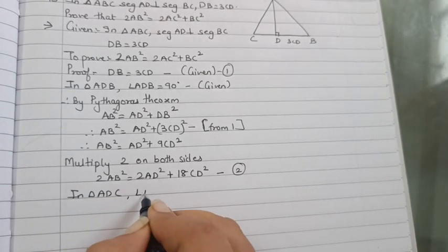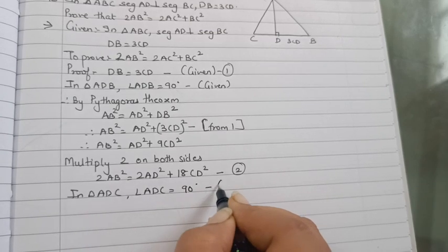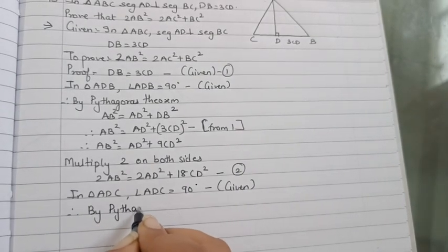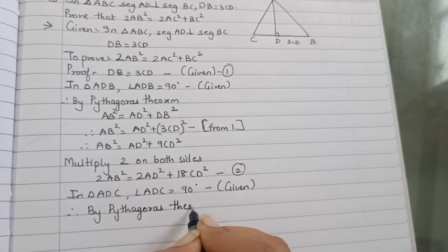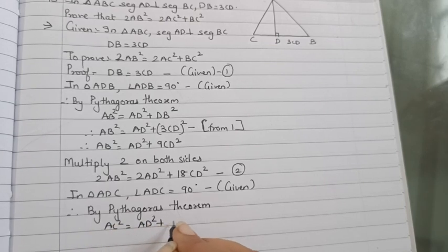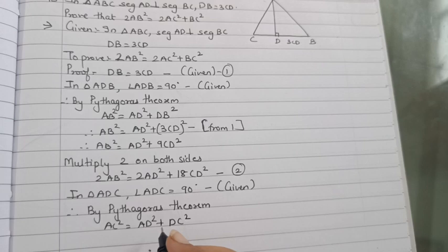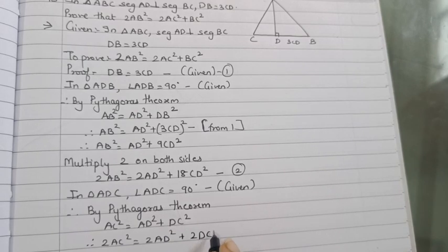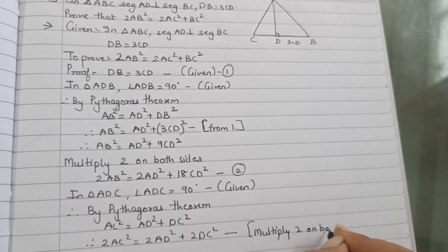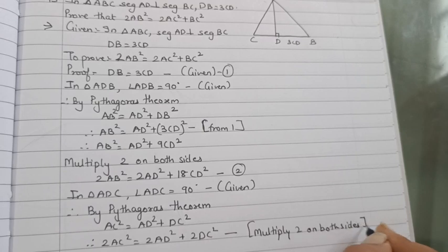So it will become 2AB² equal 2AD² plus 18CD². Mark this as equation 2. Now in triangle ADC, angle ADC is equal to 90 degree, so therefore by Pythagoras theorem, AC² is equal to AD² plus DC² or CD². Multiply 2 on both sides. Therefore 2AC² equal 2AD² plus 2DC². Mark it equation 3.